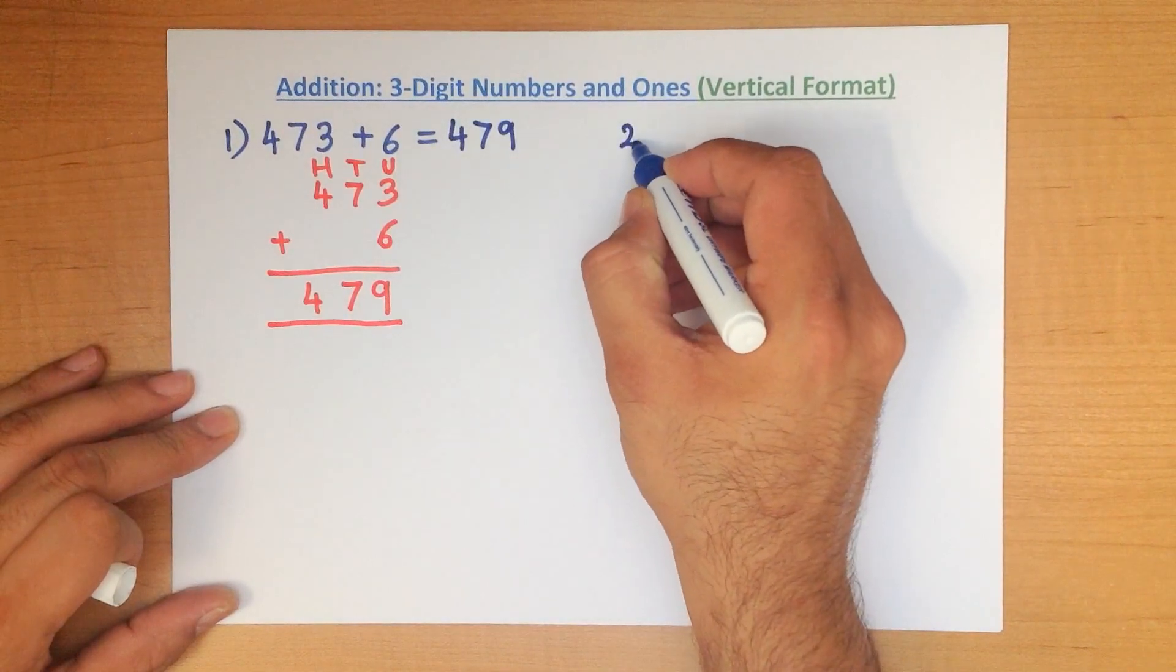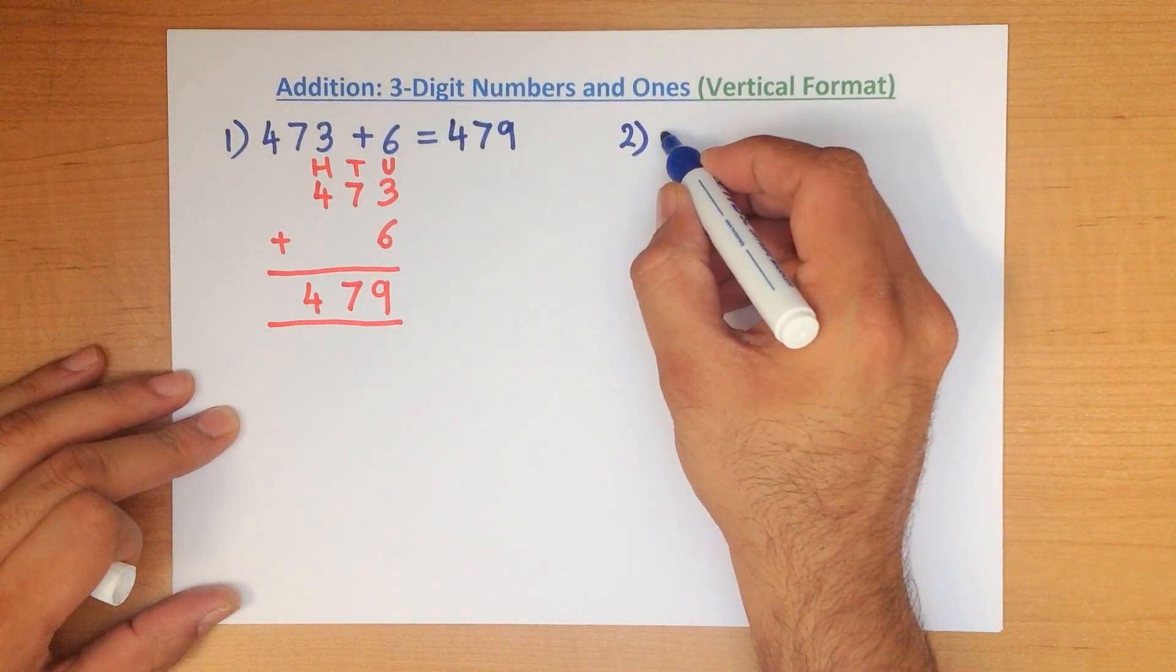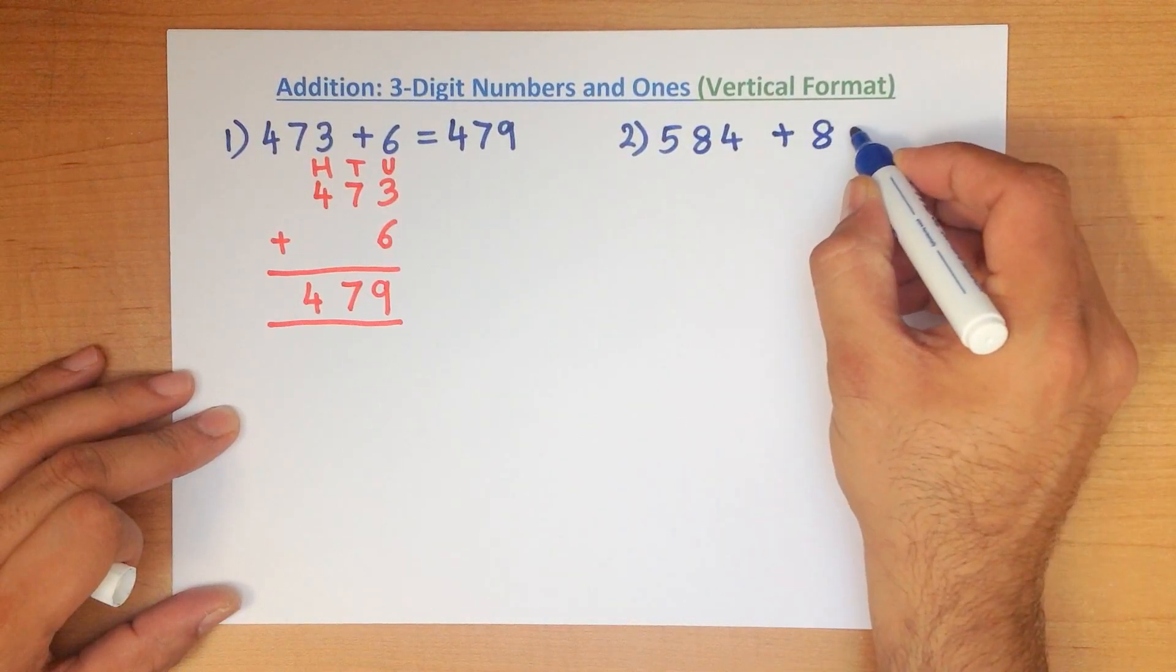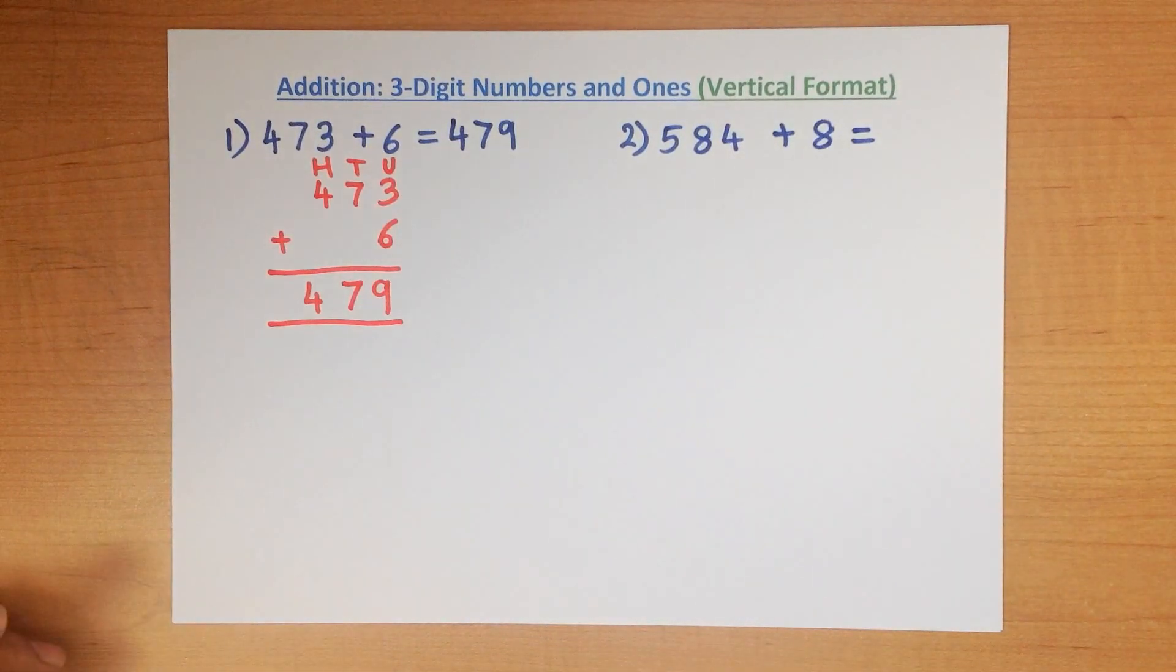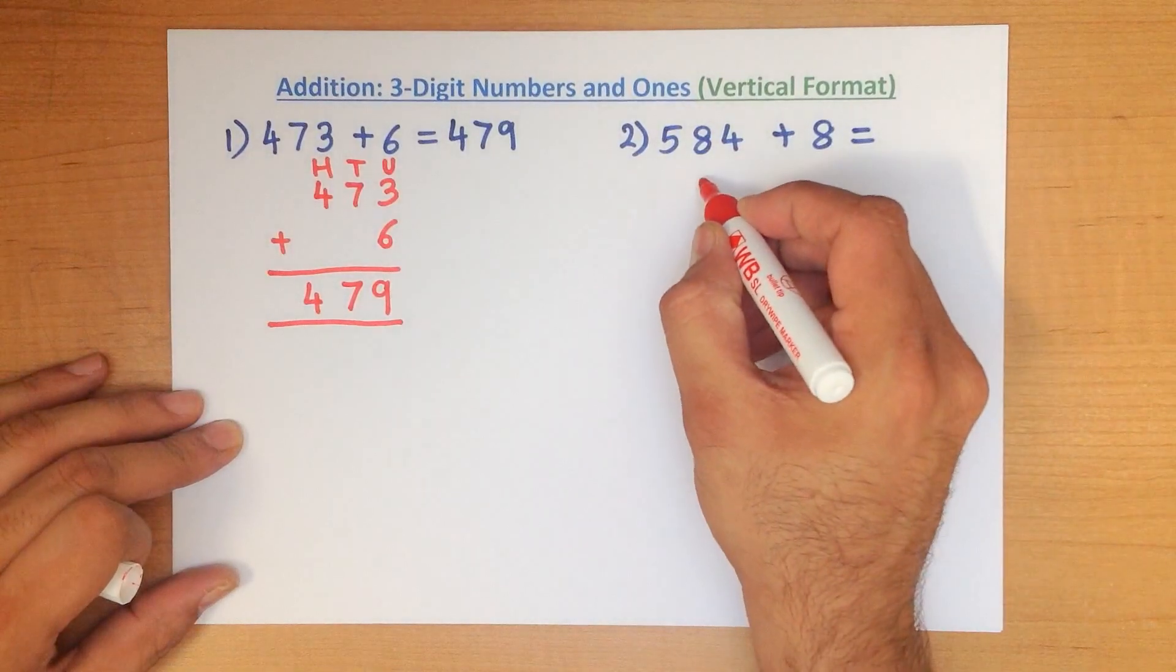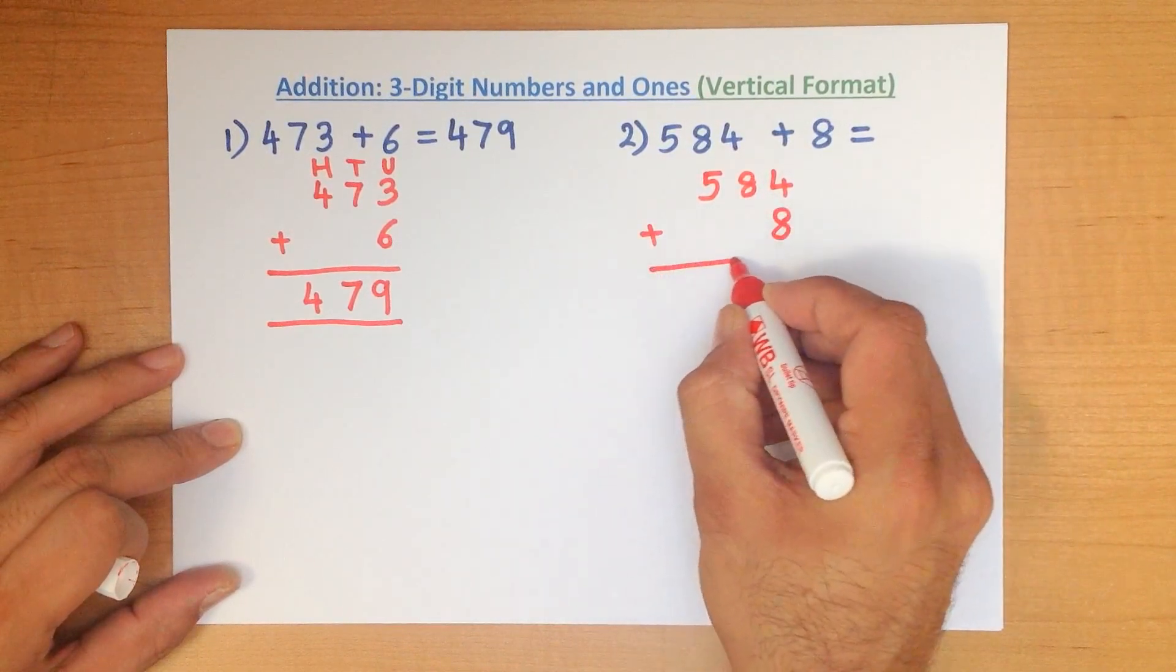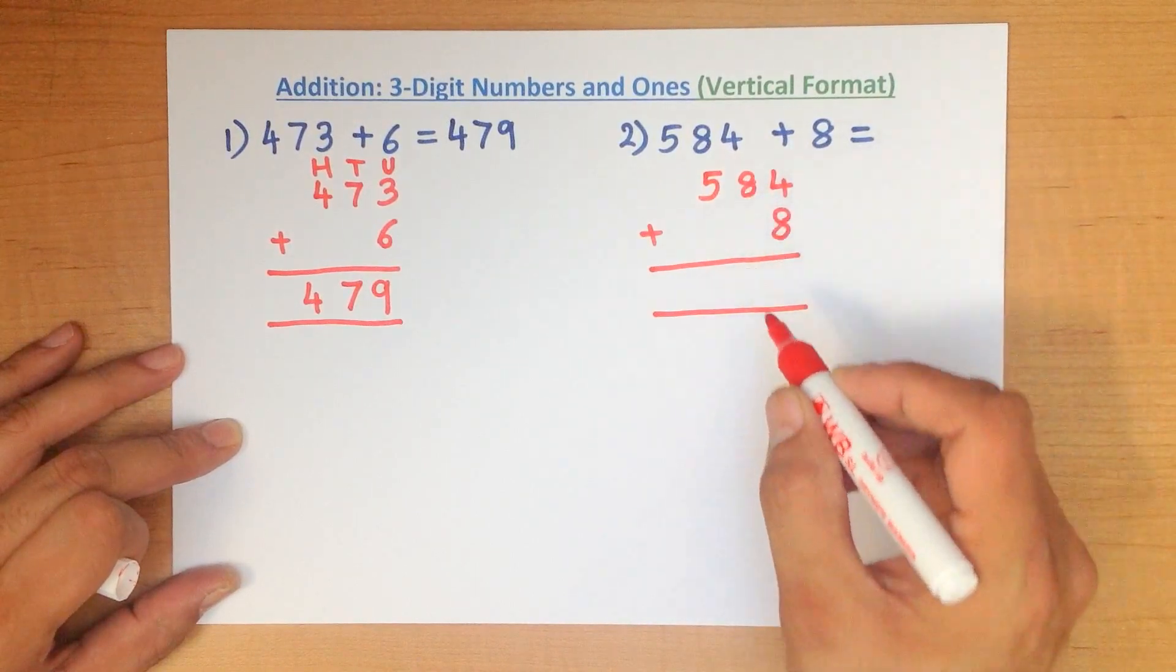Let's try another example. What is 584 plus 8? Writing the numbers down in the vertical format. Always make sure you write them down in nice, neat columns.